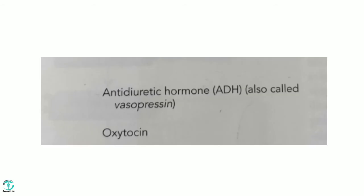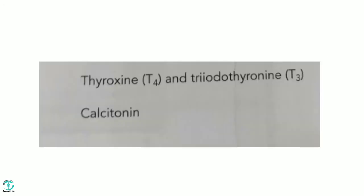The posterior pituitary secretes two hormones: the first is antidiuretic hormone, also called vasopressin or ADH, and the second is oxytocin. Now we move to the fourth gland — the thyroid. The thyroid secretes thyroxine, also called T4, and also T3.